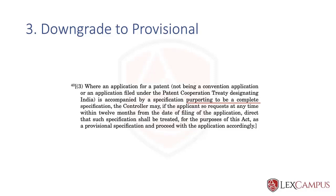Proceeding with the application accordingly means that if this is now treated as a provisional, you have to file the complete within 12 months — not from the date of downgrading, but from the date on which the application was originally filed. The 12 months is always from the date of filing the first disclosure. So once you file a purported complete, within 12 months you can downgrade it to a provisional and file a complete, which must be filed within those 12 months.